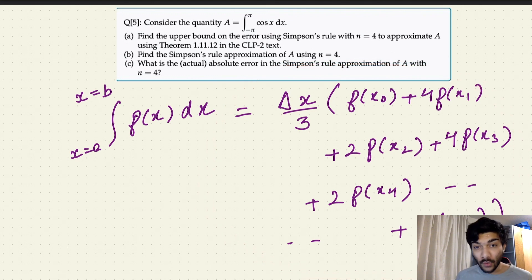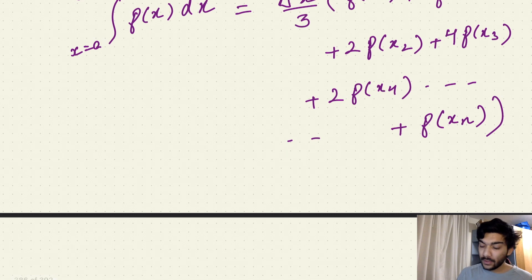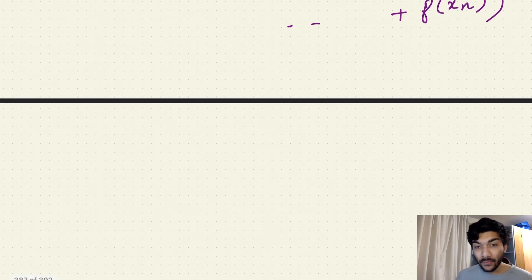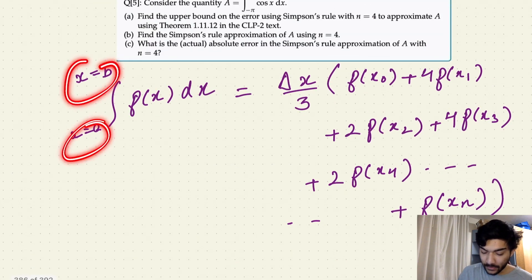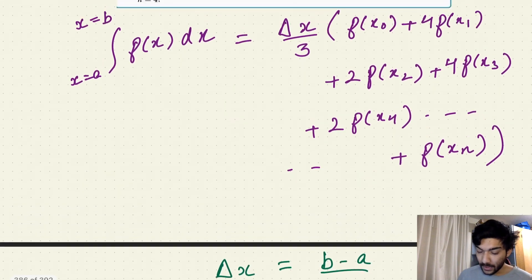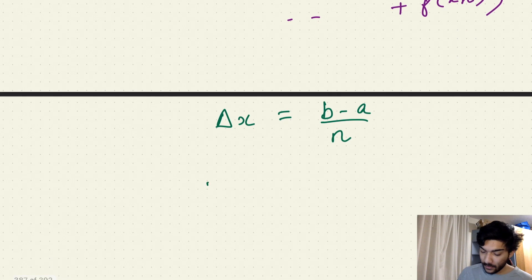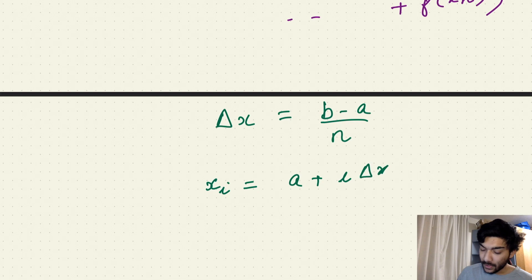Feel free to comment if you have any questions regarding this formula. Now, in order to calculate x₀, x₁, x₂, and delta x, we use the formulas we already know from Riemann sums. Delta x is b minus a over n, where b is your upper endpoint, a is your lower endpoint, and n is given in the problem. And for x_i, where i can be 0, 1, 2, 3 up to n, the formula is simply a plus i·delta x.